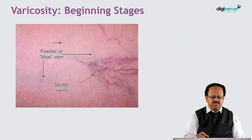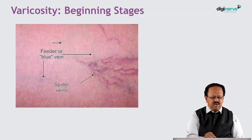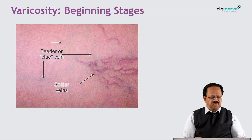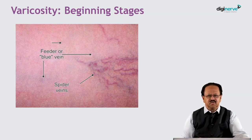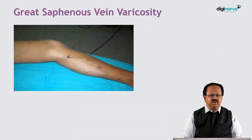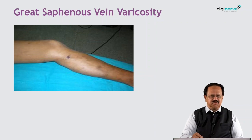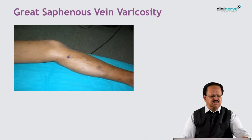This is the varicosities beginning stages. You can see the linear feeder veins in the blue vein and then the spider veins. These are the tortuous spider reticular veins which are starting there. And this figure depicts the great saphenous vein varicosity which runs from the medial margin of the venous arch till the saphenofemoral junction.